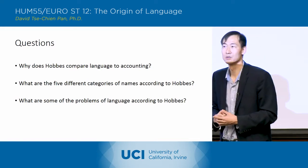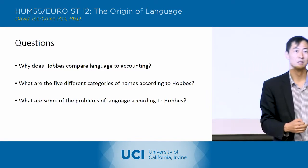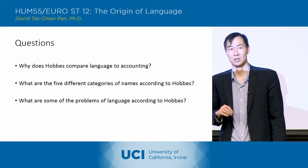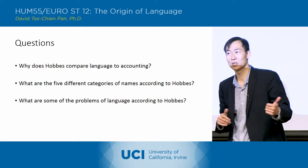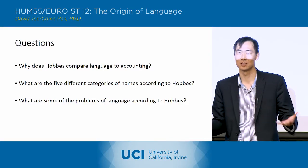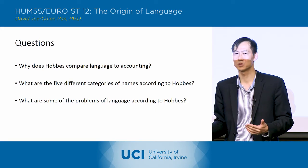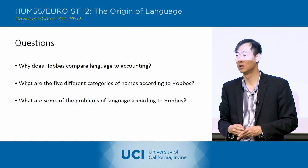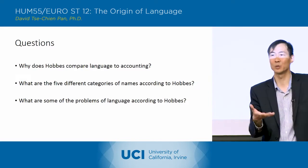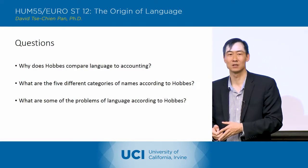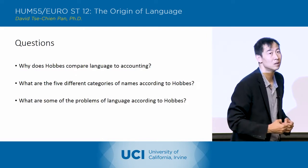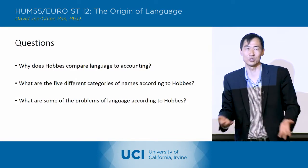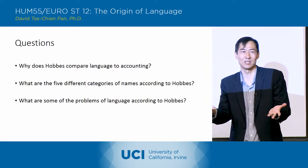And what are some of the problems of language according to Hobbes? You can define something incorrectly. Different people can have different definitions of the same thing - that upsets the unity and constancy of language. Words can be interpreted differently by different people, and also interpreted differently by the same person on a different day. You can also put together words in a contradictory way - like 'incorporeal virtue' or 'the round quadrangle' - something that can't exist, that is self-contradictory.